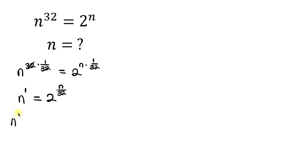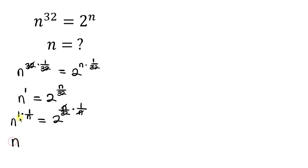So I have n to the 1 — remember, I'm multiplying the exponent of both sides by 1 over n. Equal to 2 to the n over 32, multiplied by 1 over n. Notice that n cancels n, so that we have n to the 1 times 1 over n, which is 1 over n. Equal to 2 to the 1 over 32. We've now been able to separate the variable n.